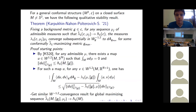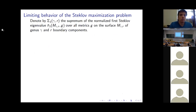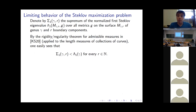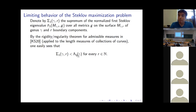Returning to the Steklov maximization problem: let σ₁(γ, r) denote the supremum of the normalized first Steklov eigenvalue over all metrics on a surface of genus γ and r boundary components. By Fraser-Schoen and Matthias-Ndiaye, these are achieved by free boundary minimal surfaces in Euclidean balls. As a consequence of the regularity theorem for admissible measures applied to length measures of curves in closed surfaces, the Steklov maximum for genus γ and any number of boundary components is strictly bounded above by the Laplacian maximum λ₁(γ).